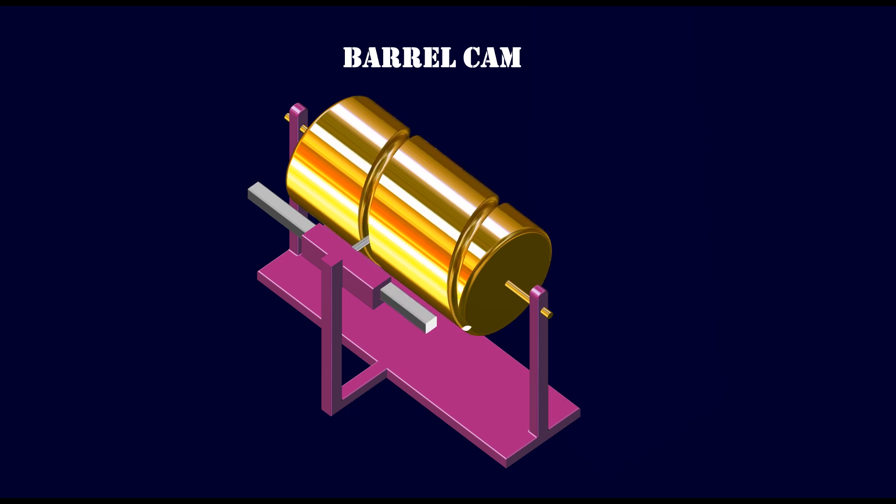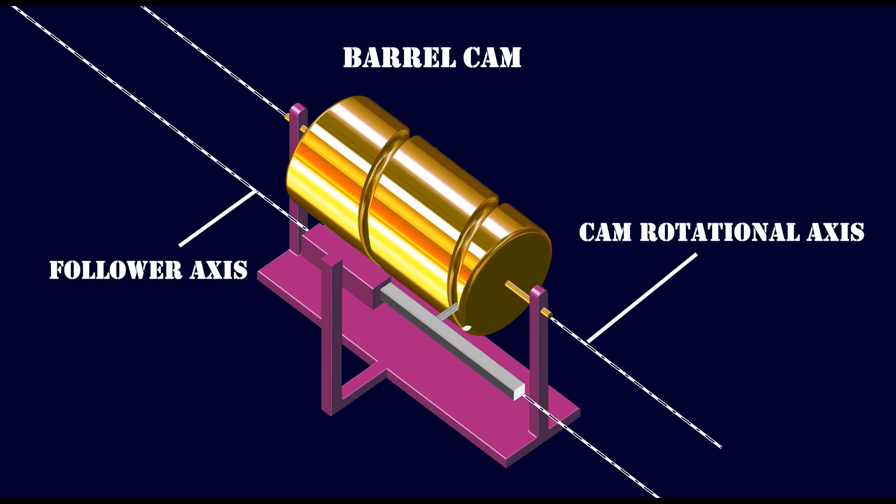These cams are principally used to convert rotational motion to linear motion, parallel to the rotational axis of the cylinder.